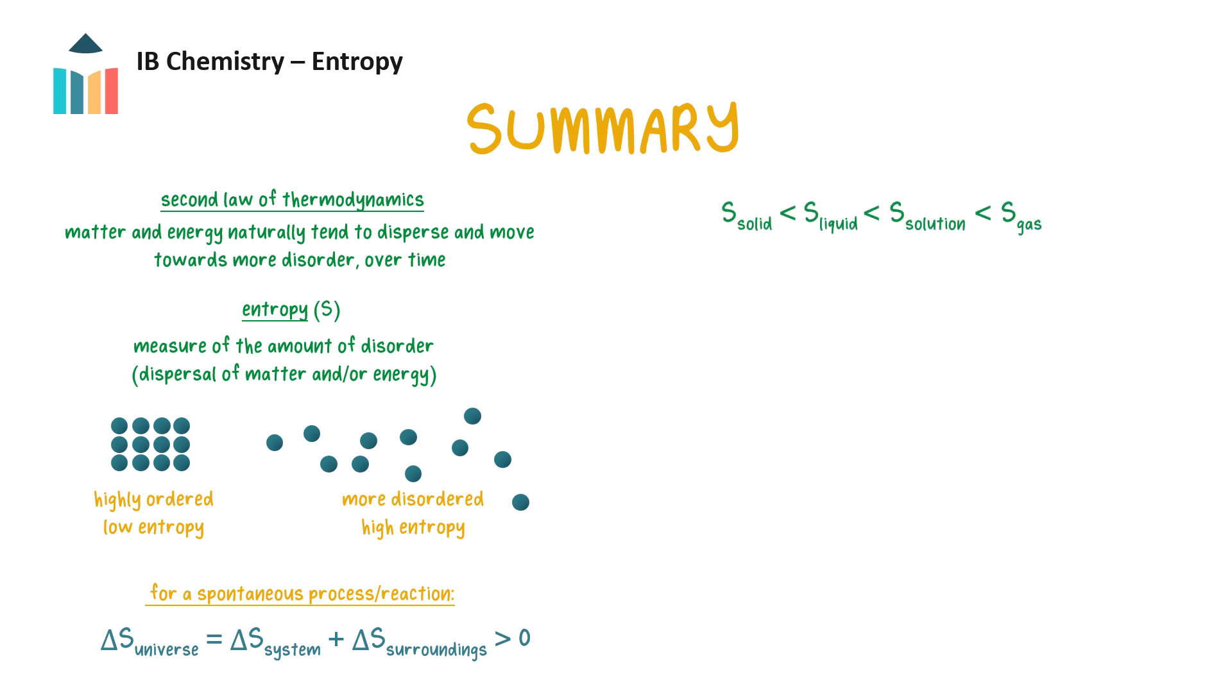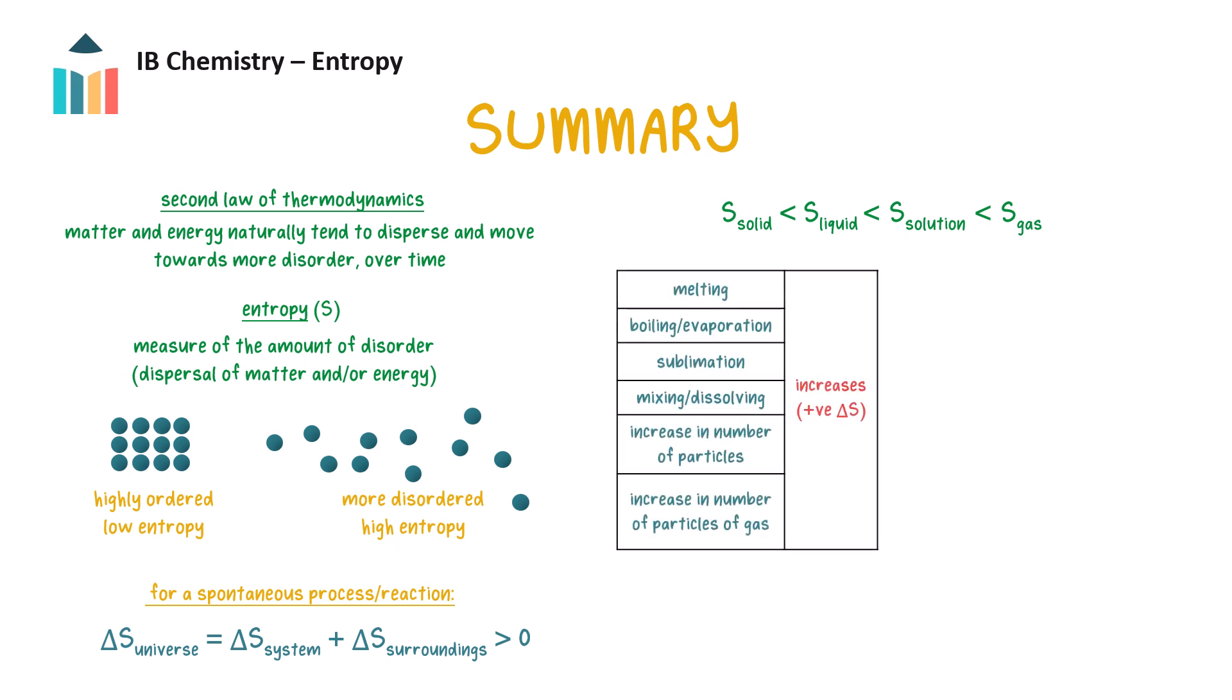For a substance, the absolute entropy of its solid is less than that of its liquid, and less than that of a solution of that substance, and gases have the highest entropies. Phase changes that occur on heating, as well as dissolution, reactions involving an increase in the number of particles, especially the number of particles of gas, have a positive entropy change.